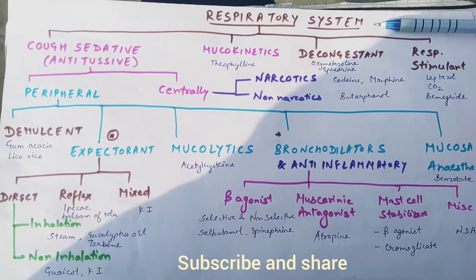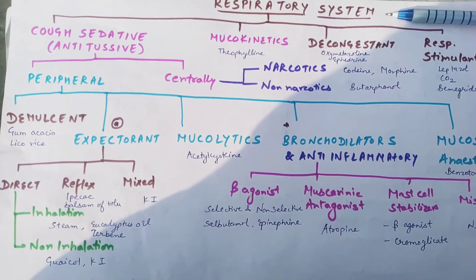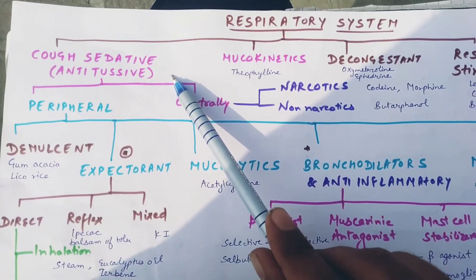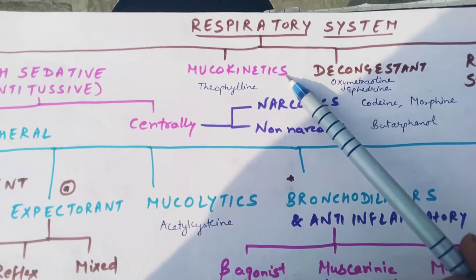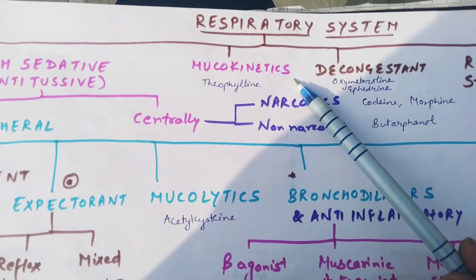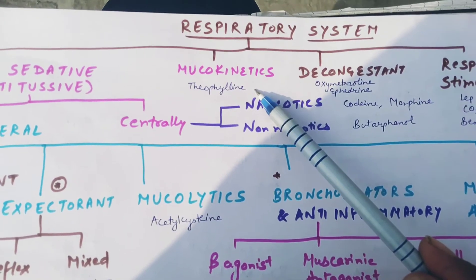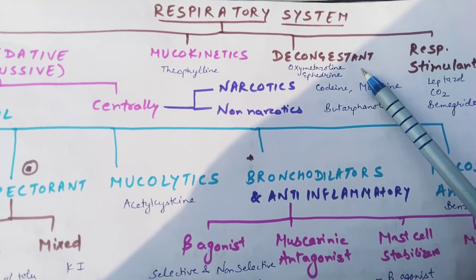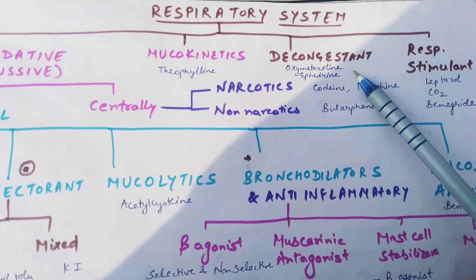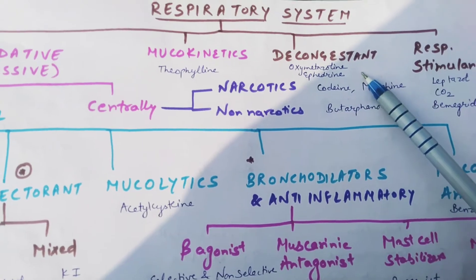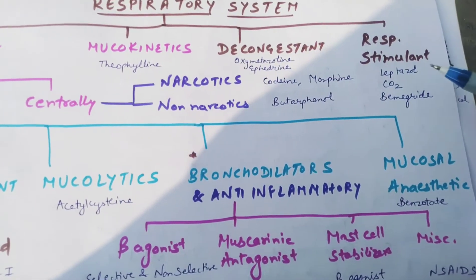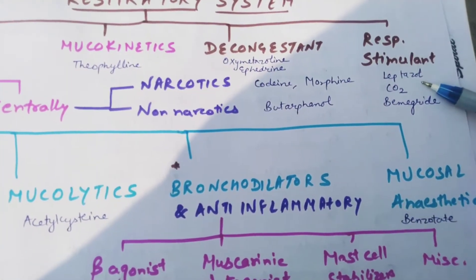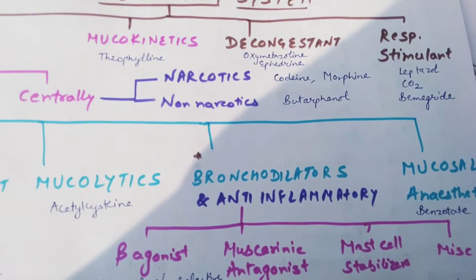We will be dealing with drugs acting on the respiratory system, basically divided into: cough sedative or antitussive drugs which suppress the cough; mucokinetics which increase mucous secretion activity like theophylline; decongestants which decrease the swelling of the nasal membrane like oxymetazoline, ephedrine, xylometazoline; and respiratory stimulants which stimulate the respiratory center like leptazole, carbon dioxide, and bemegride.